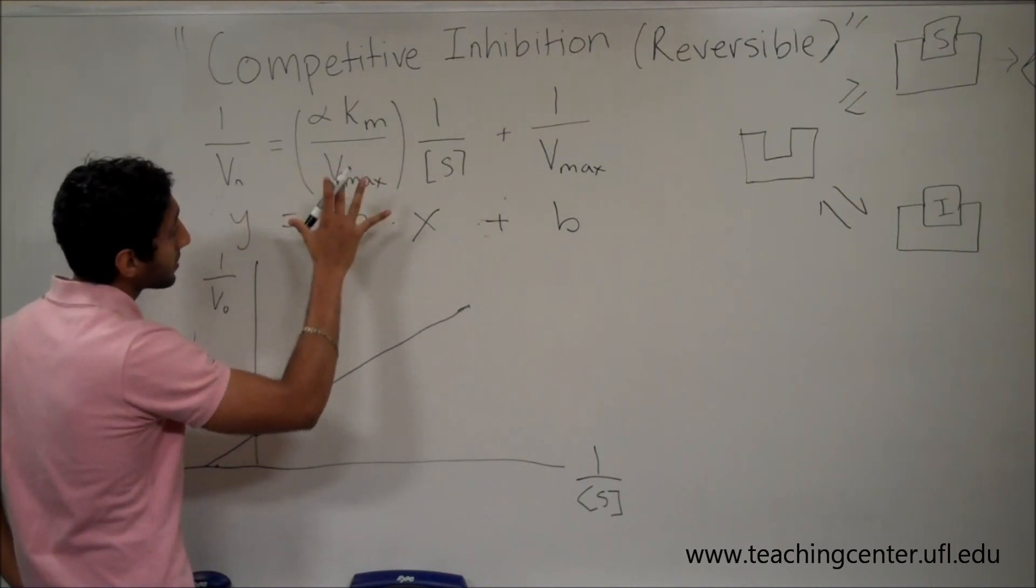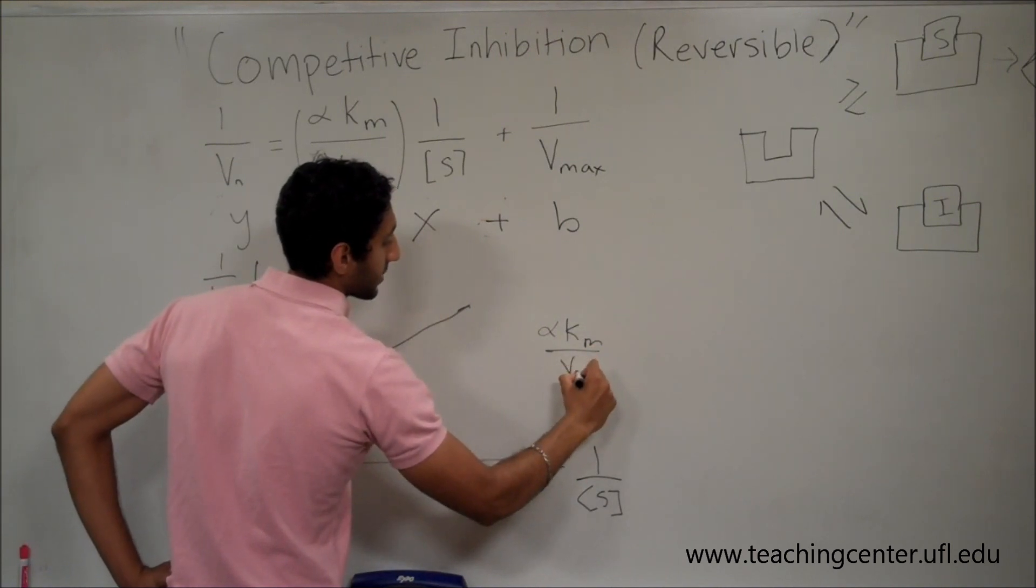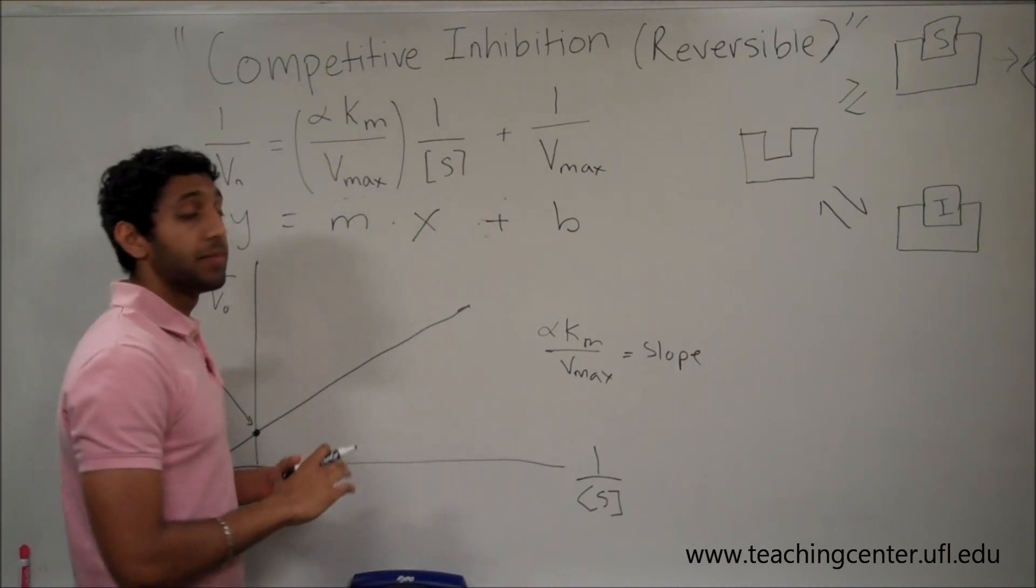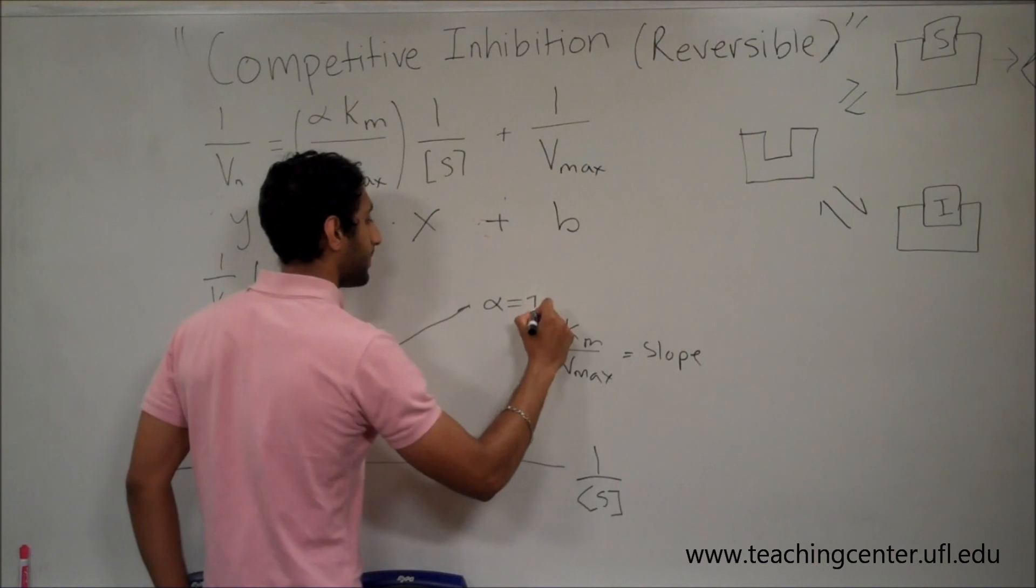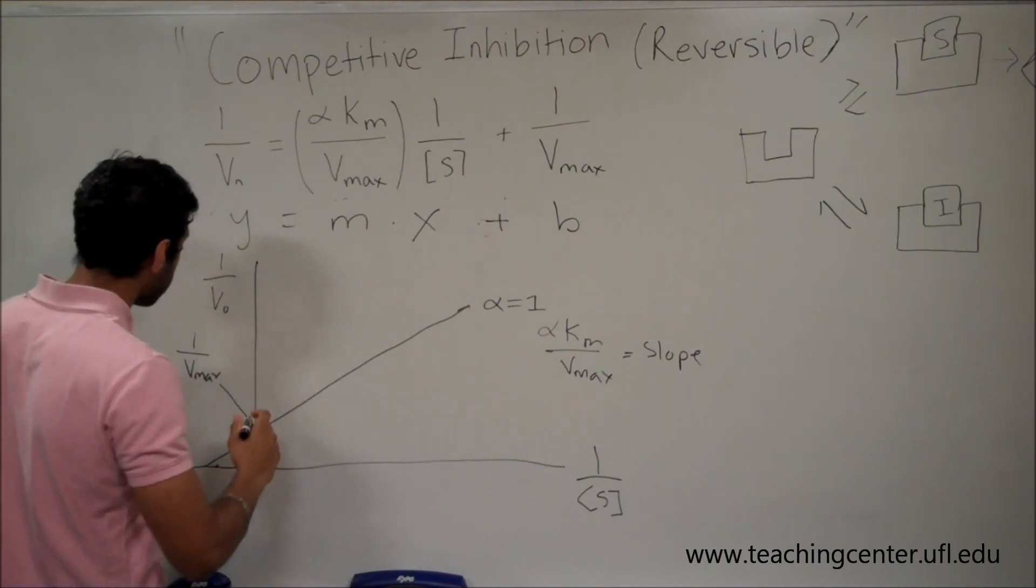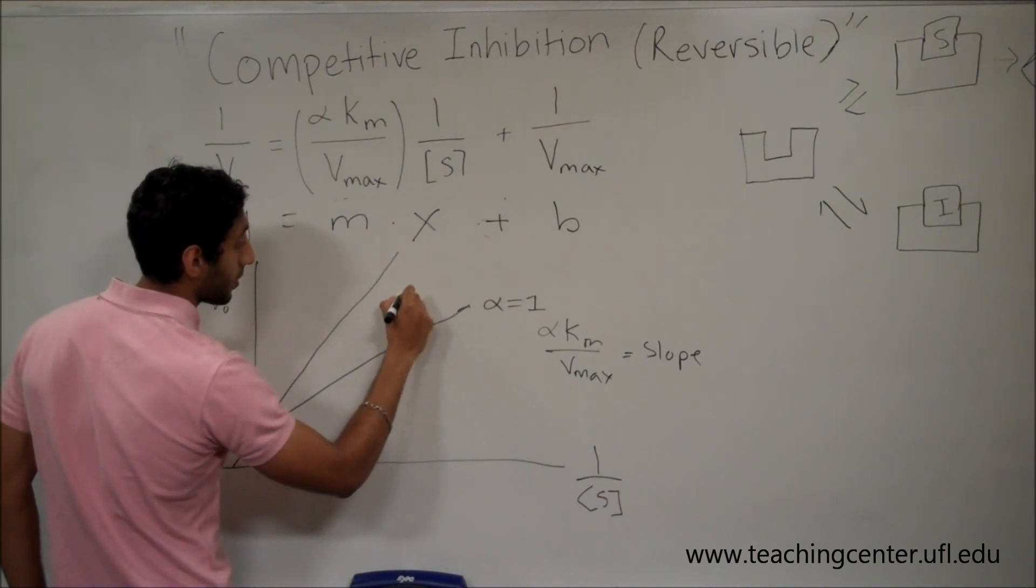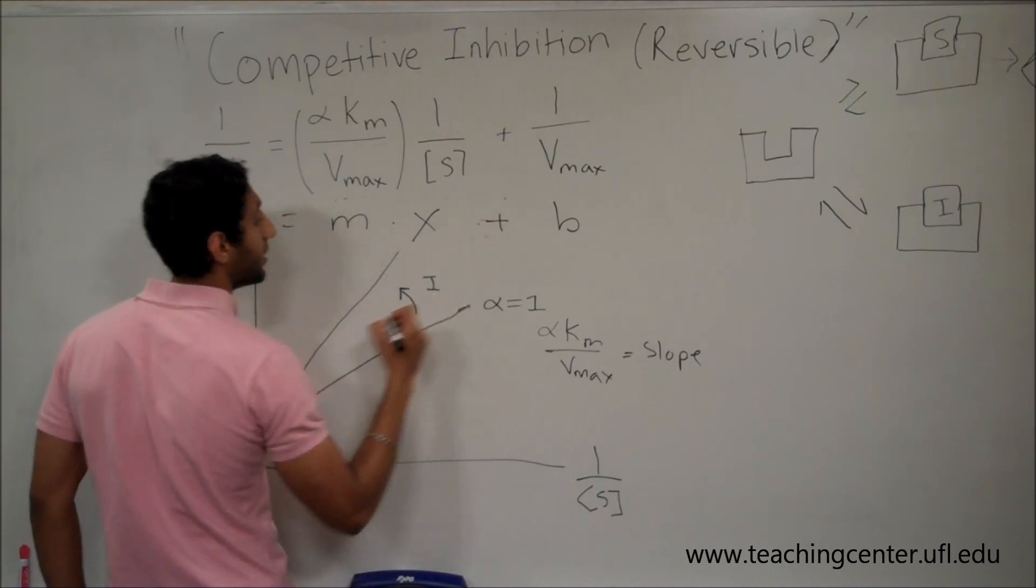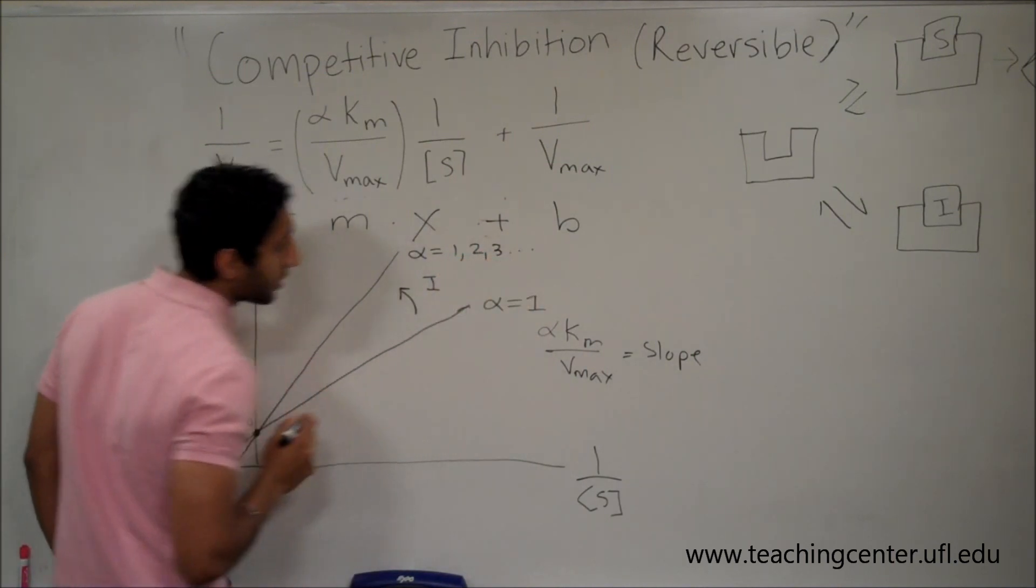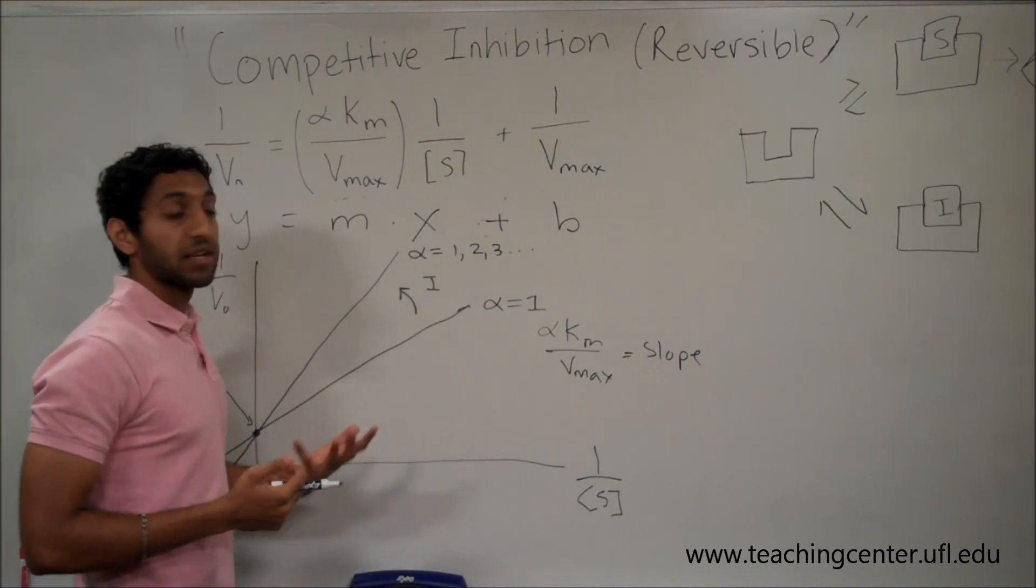As far as the slope is concerned, we know the slope is going to be alpha Km over vmax. And when the enzyme is not under inhibition, alpha is equal to 1. Now what happens to the graph when inhibitors are involved, particularly in competitive inhibition? It'll rotate the graph. I'll put i for inhibitor. And alpha will increase: 1, 2, 3, etc. And the higher the alpha value, the stronger the effect of the inhibitor.